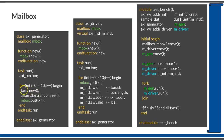The transaction object is randomized using the randomize() function — this generates random values for its member variables. After randomization, the transaction members have values ready to send. The generator doesn't know who will consume the transaction, so it puts the transaction into the mailbox using mbox.put(). Any consumer connected to this mailbox can then take and consume the transaction.